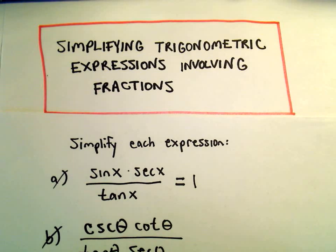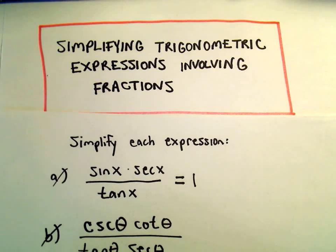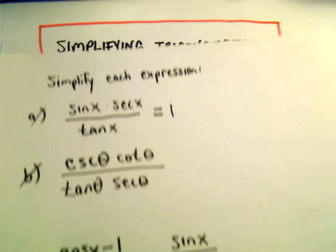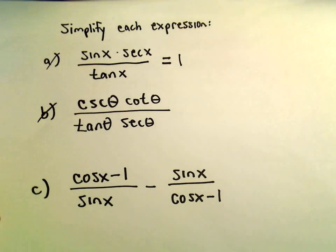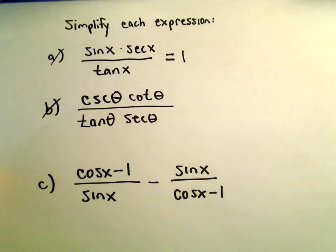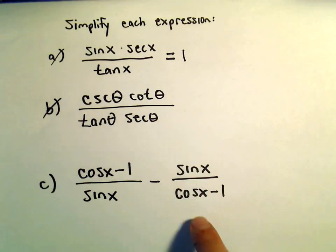One more example here of simplifying some trig expressions involving fractions. We've got cosine x minus 1 over sine x, minus sine x over cosine x minus 1.